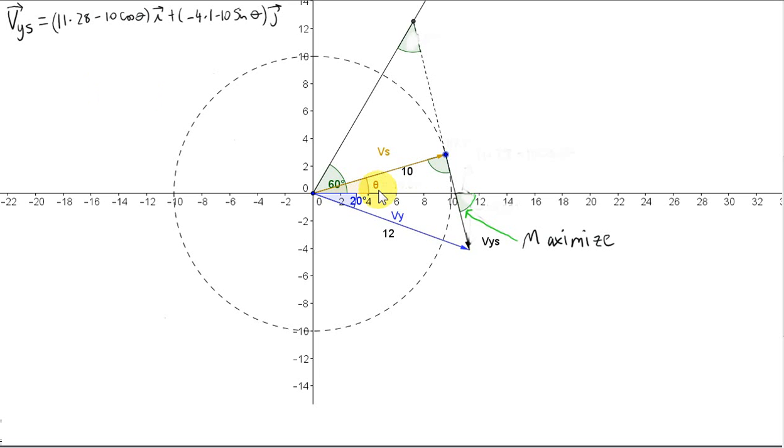In the last video we found the angle theta which maximizes this angle out here. That angle theta gives us the direction that the speedboat must move in, the direction of vector Vs, such that the speedboat gets as close as possible to the yacht. We found that angle theta by using a fairly simple geometrical argument. In this video we will do that problem again. We will find theta, but this time by using calculus.